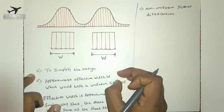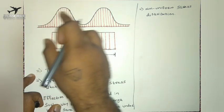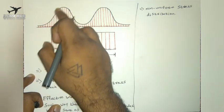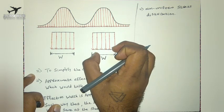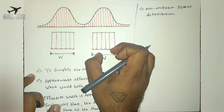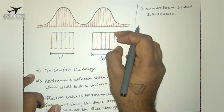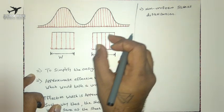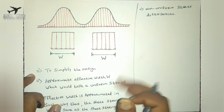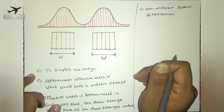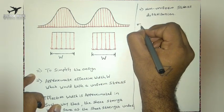We approximate a width W in such a way that this width will carry a uniform stress, and the strength of this effective width will be equal to the sheet strength under the non-uniform stress distribution. So we have a width W carrying a uniform stress, and we need to find the value of that width.